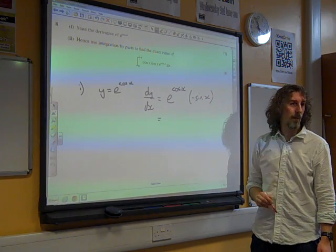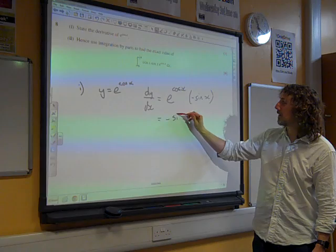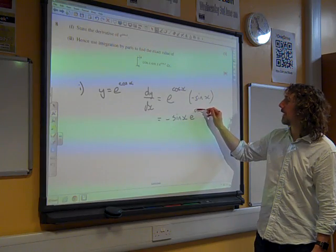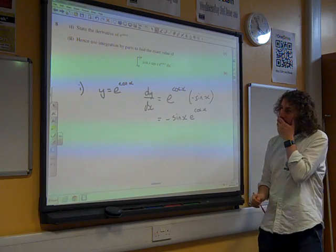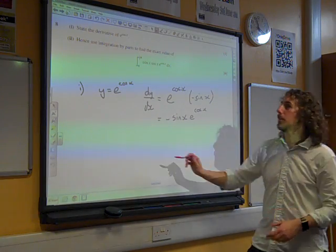Right, so the answer, when you differentiate it, is minus sin x, e to the cos x. Great. Ah. Right. Part two.